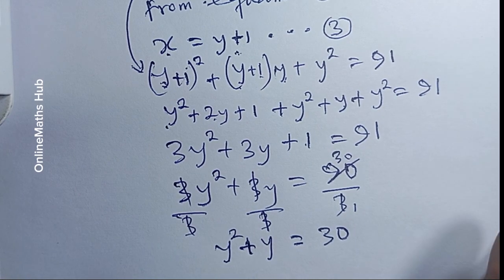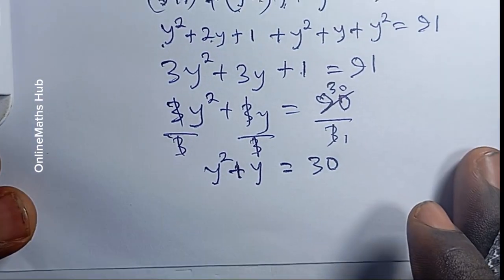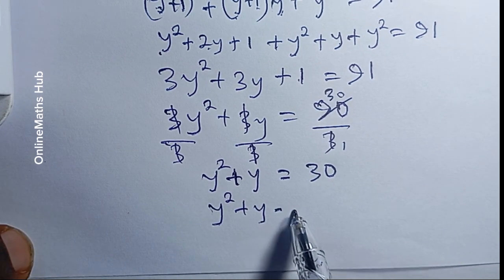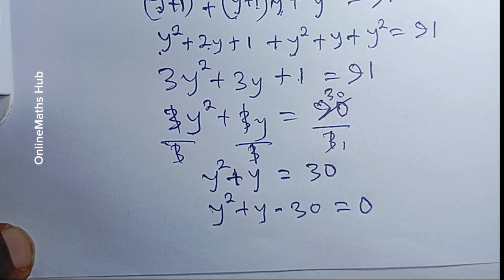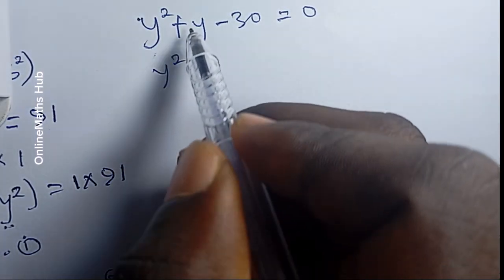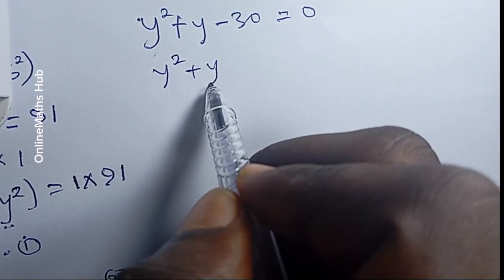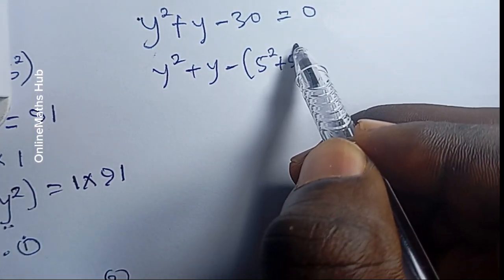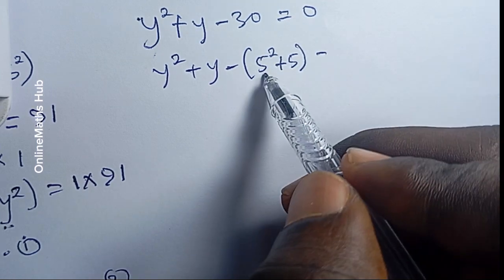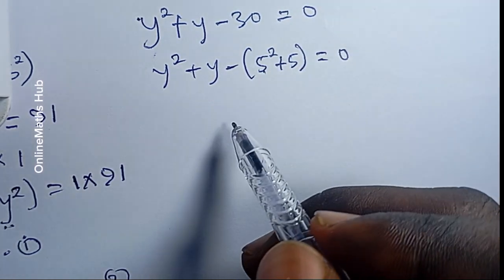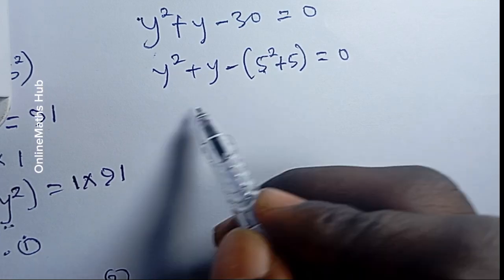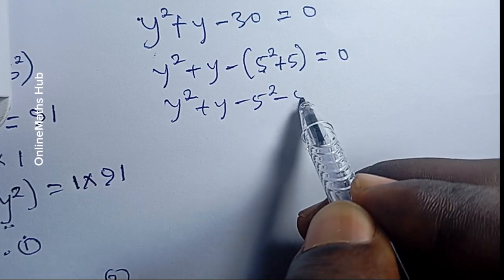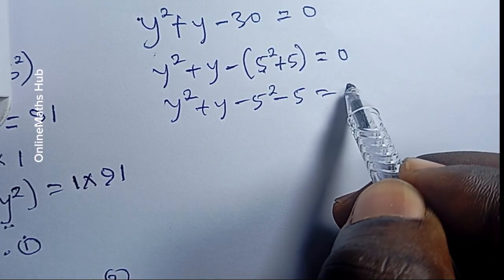Subtracting 30 from both sides gives y² plus y minus 30 equals 0. We can write 30 as 5² plus 5, which is 25 plus 5. Opening this bracket gives y² plus y minus 5² minus 5 equals 0.